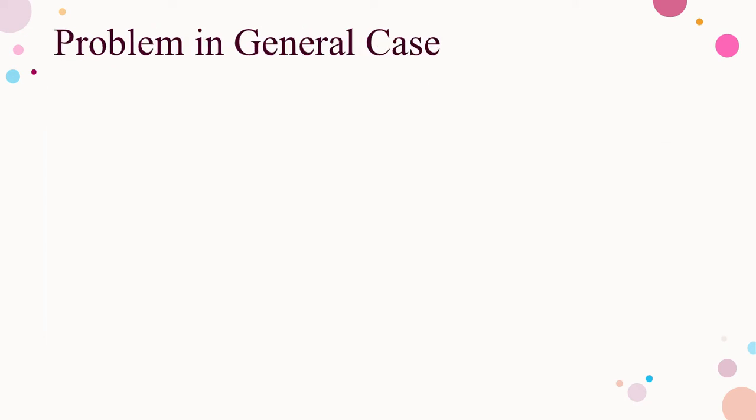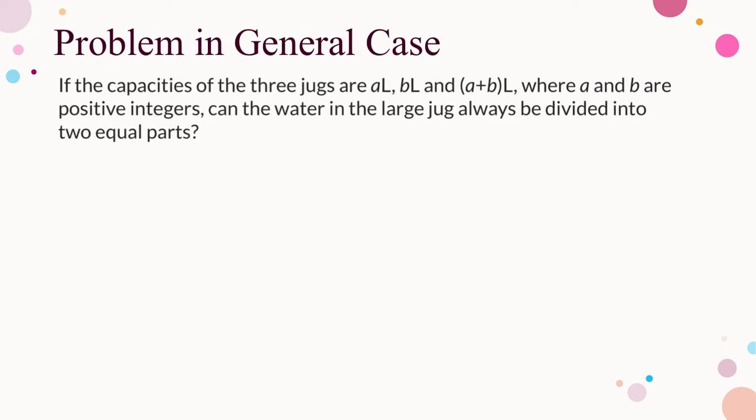The problem can be generalized as follows. If the capacities of the three jugs are a litres, b litres, and a plus b litres, where a and b are positive integers, can the water in the large jug always be divided into two equal parts? What do you think? Pause the video and think about it.